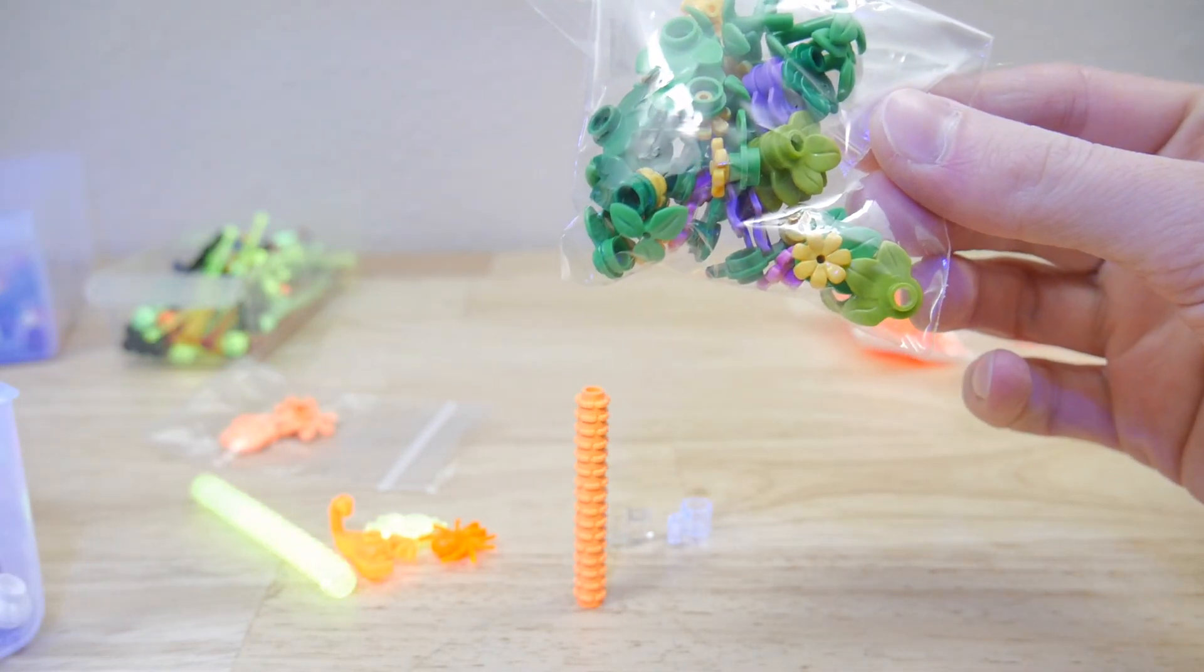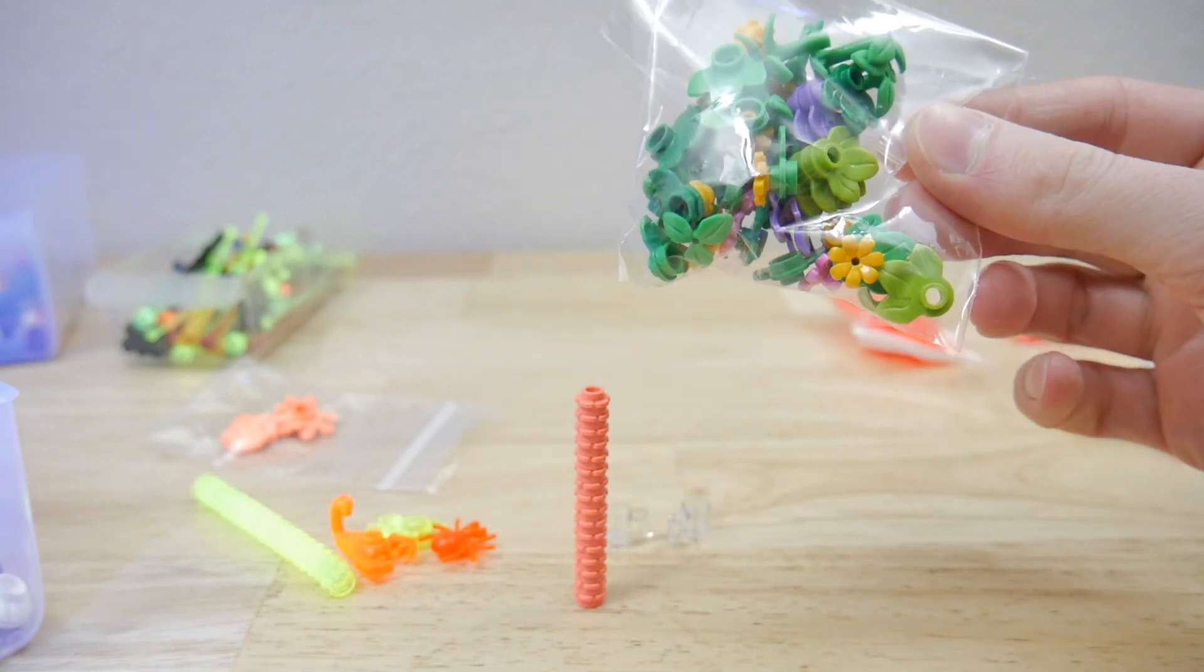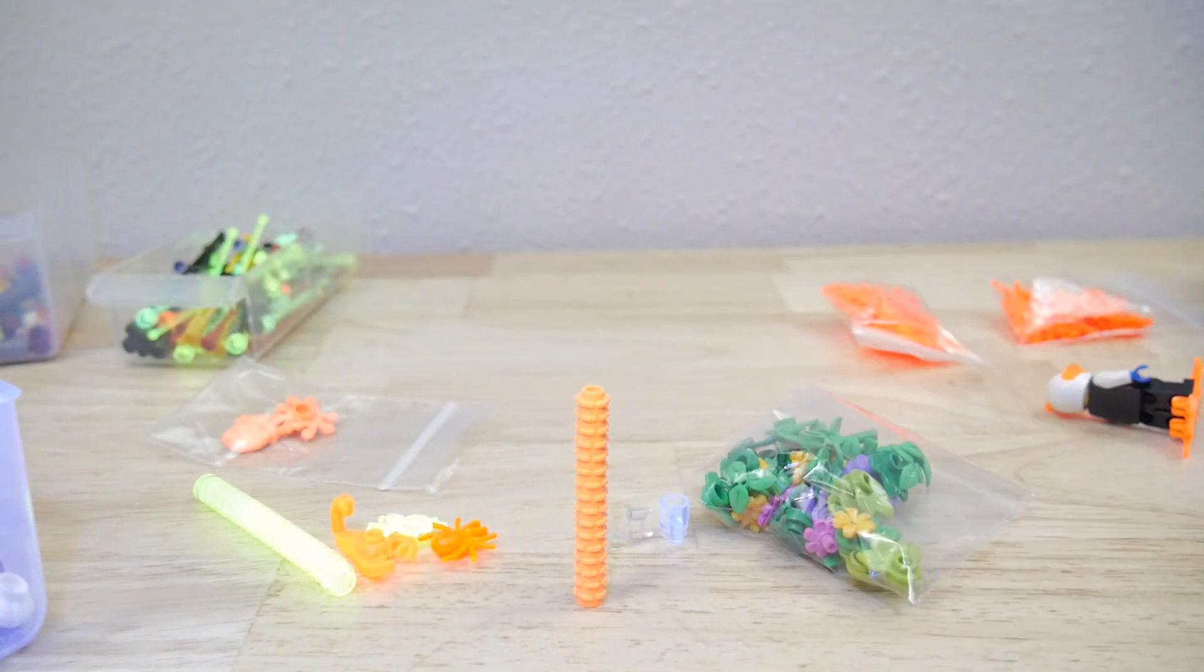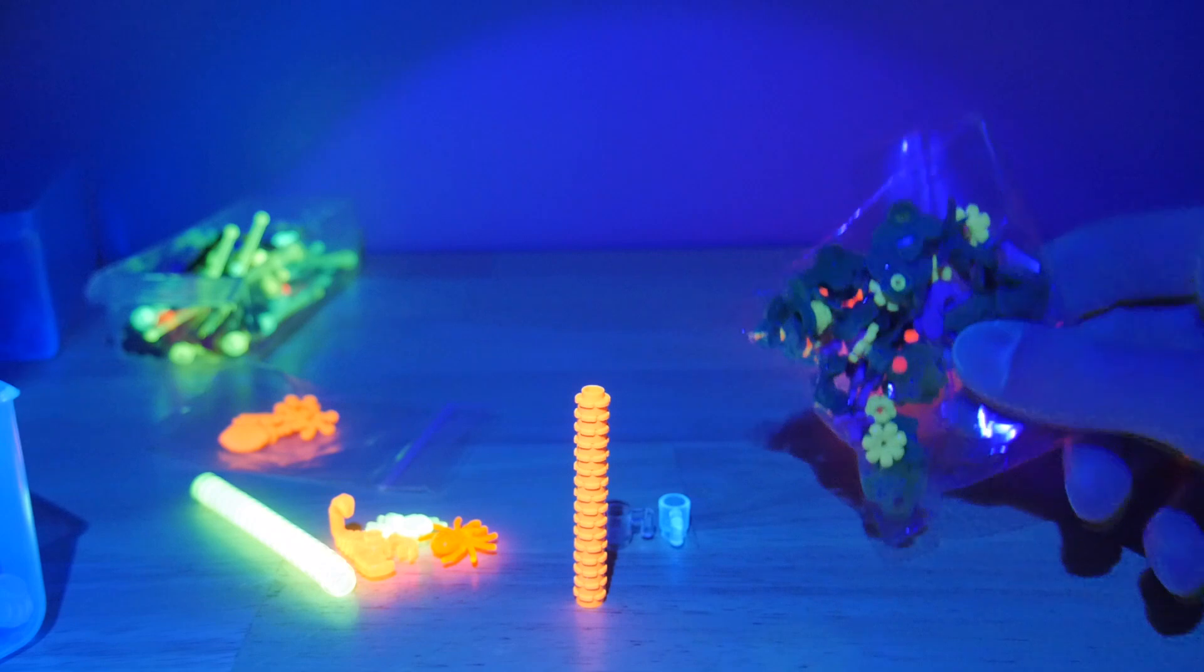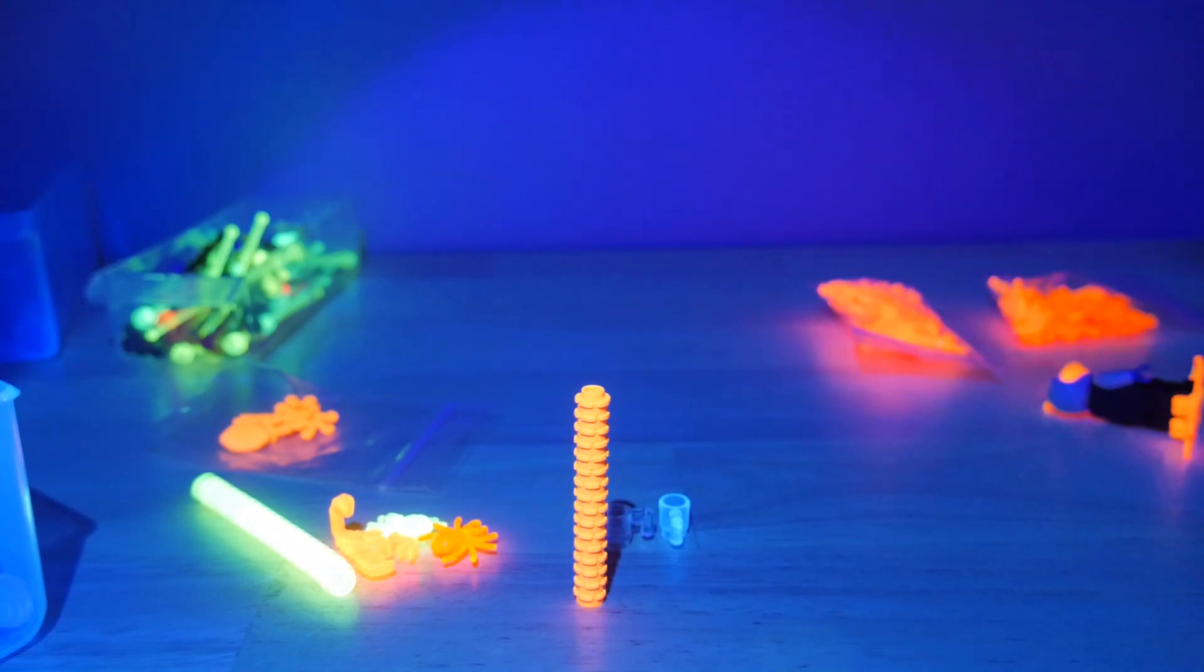Under normal light plus UV, you can't really tell too much of a difference. It just gets a little bit brighter. But in the dark there, you can pick those pieces out pretty quick.